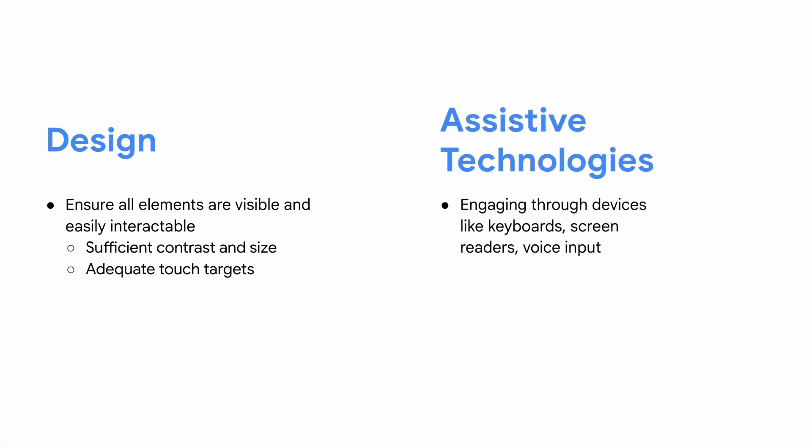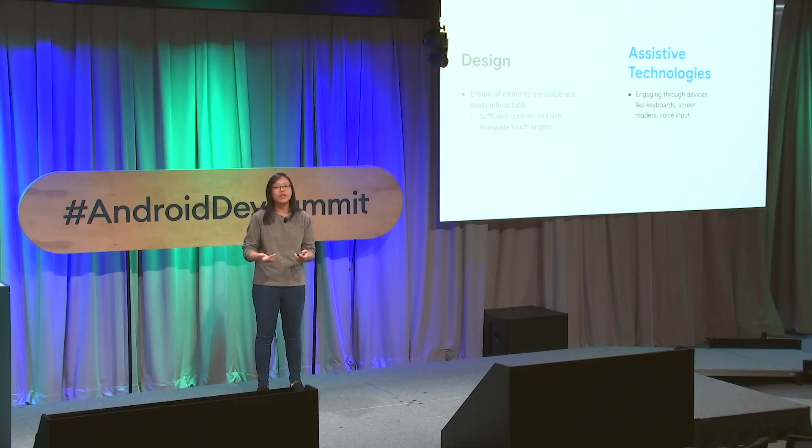Another aspect to consider when thinking about accessibility is whether your app works well with different assistive technologies. Sometimes we forget that not everybody interacts with the device the same way — users may be using devices like keyboards or services like screen readers to help them interact with their device. So today's talk, we're mostly going to be focusing on the assistive technology side to build a better understanding of how Android apps interact with accessibility services, and how you can make your apps more accessible for the wide range of users your app has.